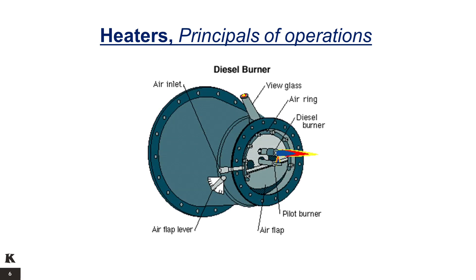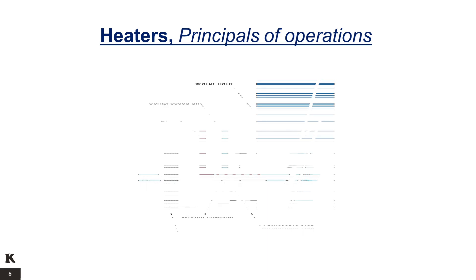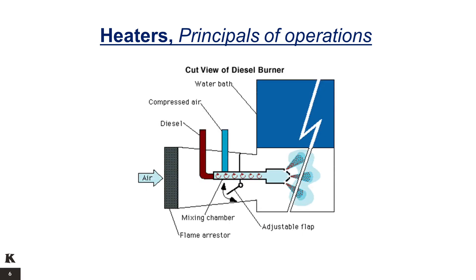An air-driven hydromechanical gear pump will pump a maximum of 55 barrels per day in order to fire the heater. There is no integral fuel tank and typically the pump sits on top of a drum full of diesel. The flow rate of the diesel supplied to the burner is controlled by adjustment of the air regulator on the pump unit.